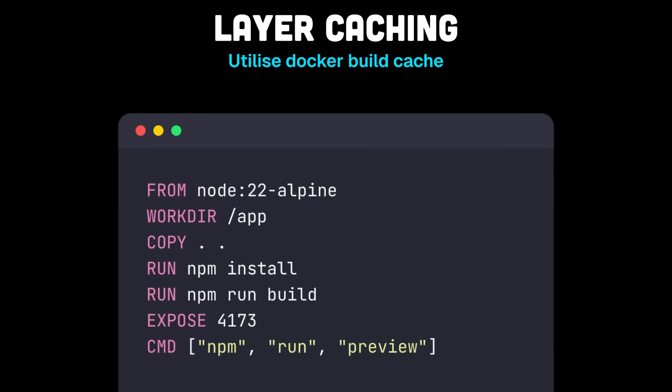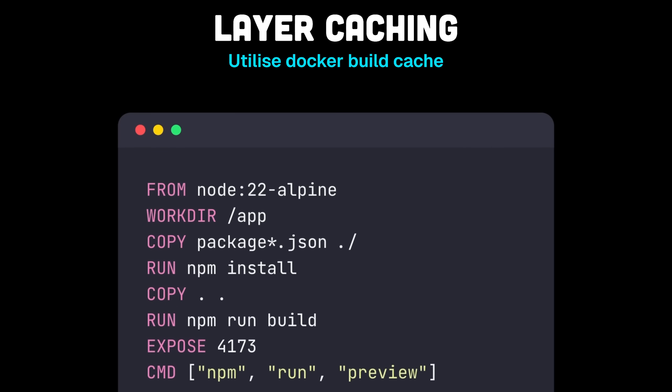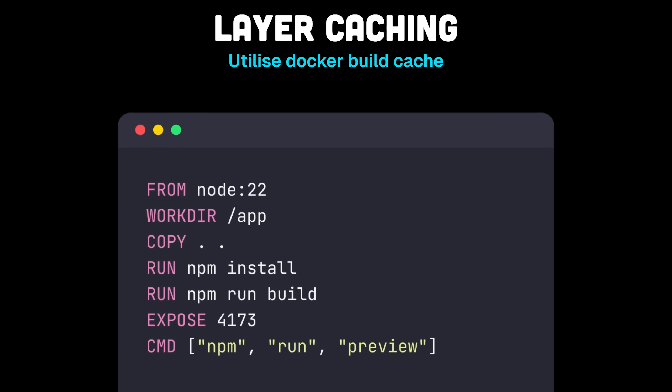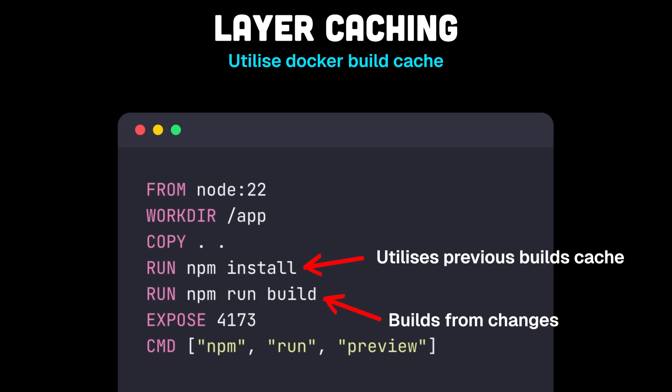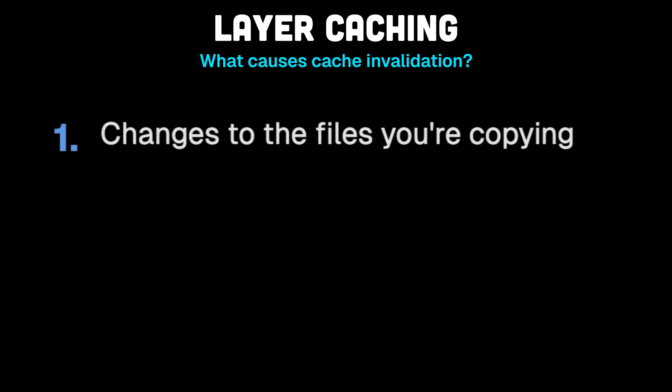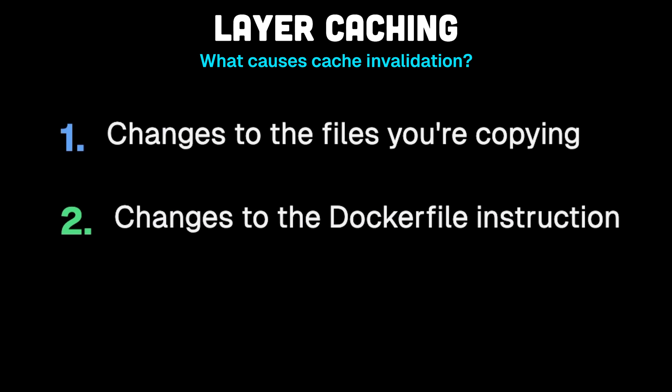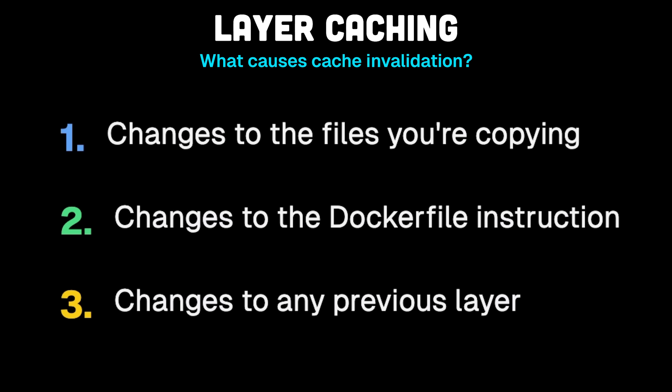The difference here is that we're copying just the package.json first. This is because our dependencies change less frequently than our code. Now on a rebuild, the dependency step can reuse the cached variant from its previous build, and only the code build step needs redoing. The same would go if you use something like requirements.txt in Python as well. Just so you know, three things trigger a cache invalidation: one, changes to the file that you're copying; two, changes to the Dockerfile instruction; and three, changes to any previous layer. This is why order matters — put your most stable layers at the top, and your most frequently changing ones at the bottom.